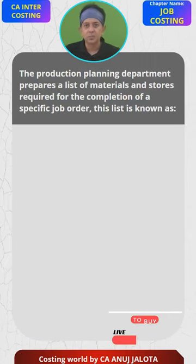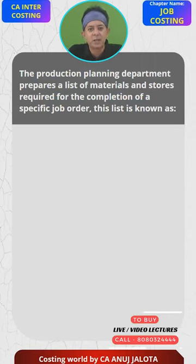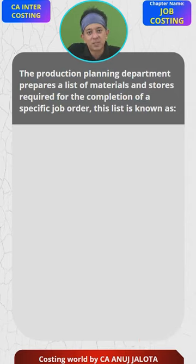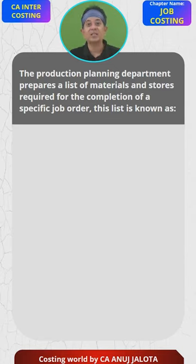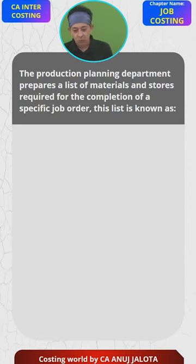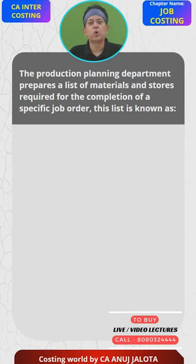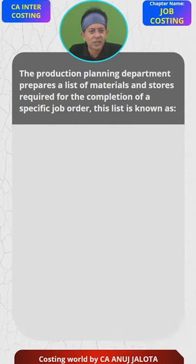The MCQ for today is: the production planning department prepares a list of the materials and the stores required for completion of a specific job order. This list is known as — now before exploring the four options, what does this question mean? Suppose there was a carpenter who got an order from a client to make a specific pattern of almira.